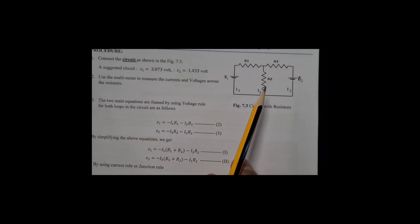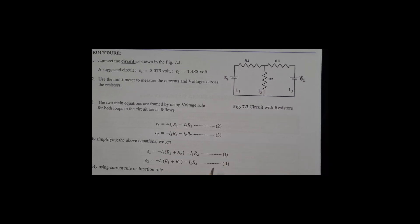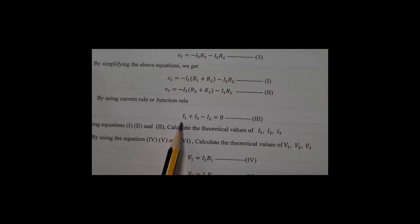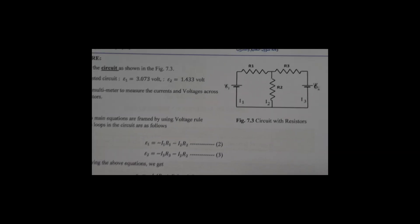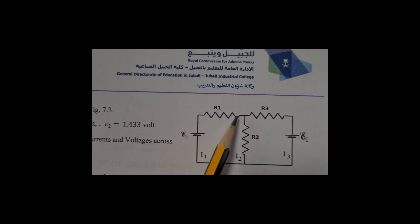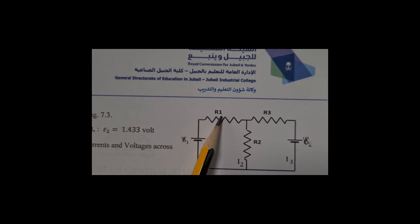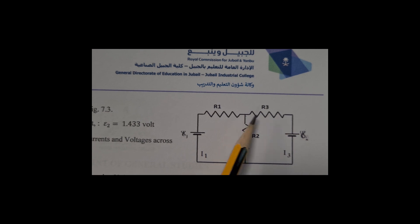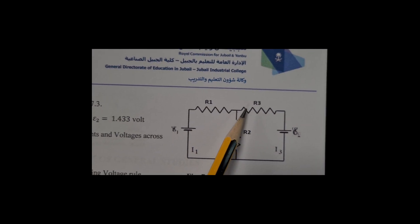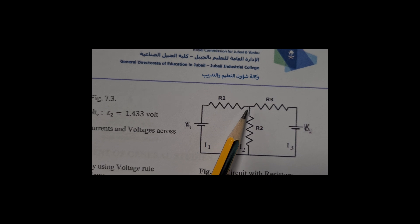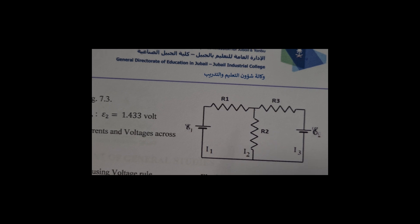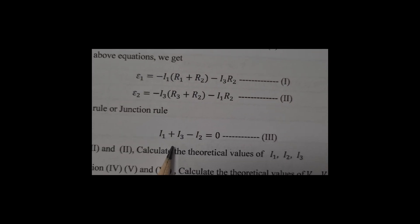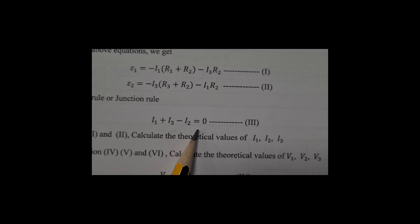We are going to apply the current rule and loop rule. Applying the point rule, we get: I1 plus I2 minus I3 minus I2 equals zero. I1 is the current flowing into the junction, and the current through R3 is also approaching the junction — both are positive. Current through R2 is leaving the junction, so I2 is negative. We get I1 plus I3 minus I2 equals zero.